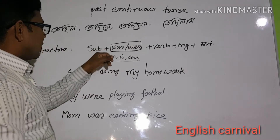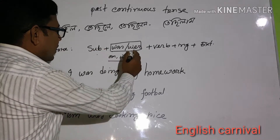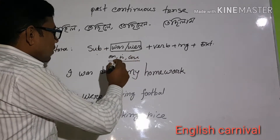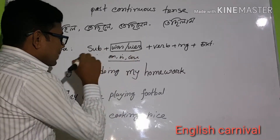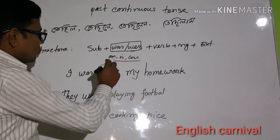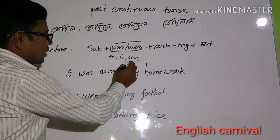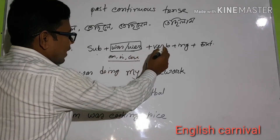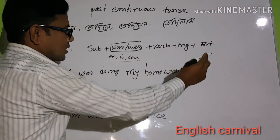That's why we should use 'was' or 'were' here for past continuous tense. In present continuous tense, we use am/is/are plus verb-ing plus extension. So that is the key difference between the two tenses.